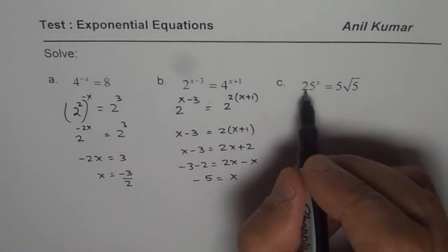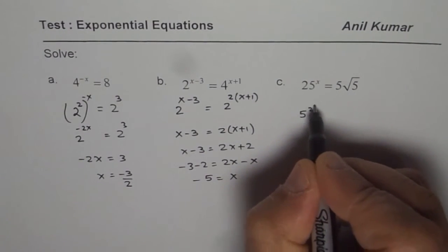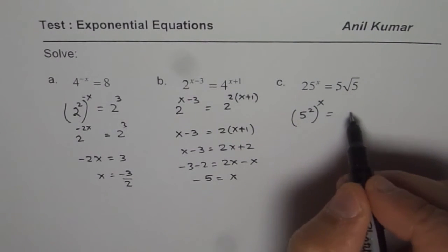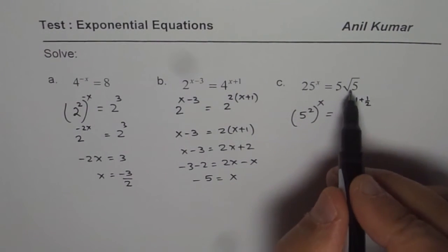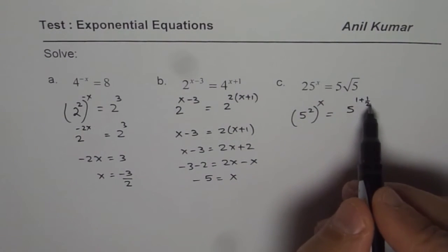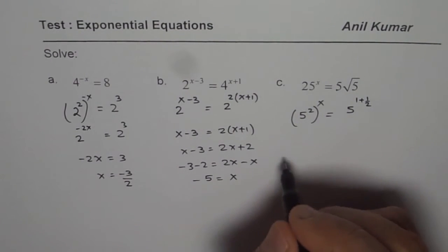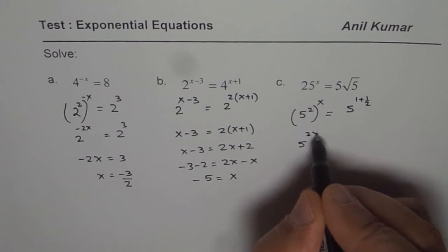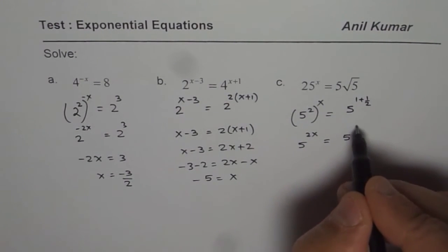For the next equation we can write 25 as 5 squared. So we get 5 squared to the power of x equals to 5 times square root of 5, which means 5 to the power of 1 plus one half. Square root of 5 means 5 to the power of half. When you multiply with the same base, add the exponents. So we apply the power rule and get 5 to the power of 2x equals to 5 to the power of 3 over 2.